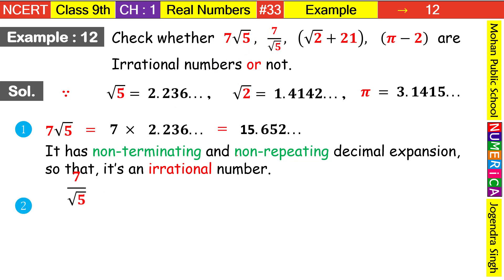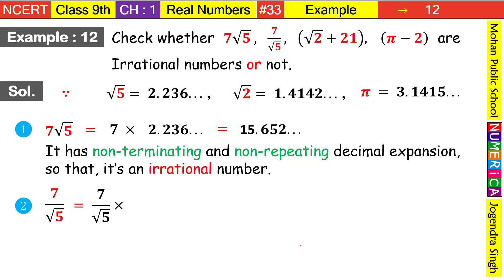Now for Solution 2: 7/√5. To solve this, we need to be a bit tricky. A rule of rational numbers is that an under-root expression in the denominator is not allowed. So to remove √5 from the denominator, we multiply both numerator and denominator by √5.